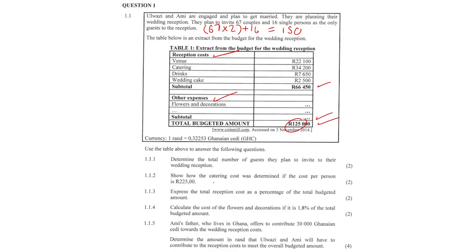Question 1.1.2: Show how the catering cost was determined if the cost per person is 225 rands. Our catering cost is 225 rands per person, and we're going to multiply that by the 150 guests plus Wazi and Amy. They are not guests, they're the bride and groom. So it's 225 times 152, and this is how we get 34,200.